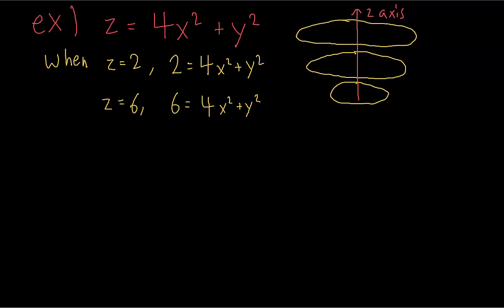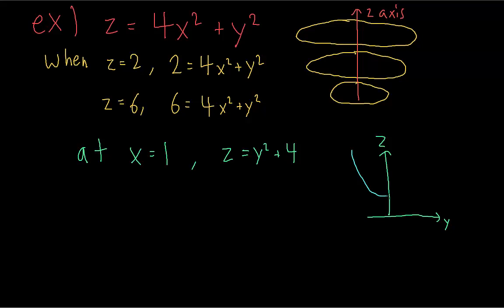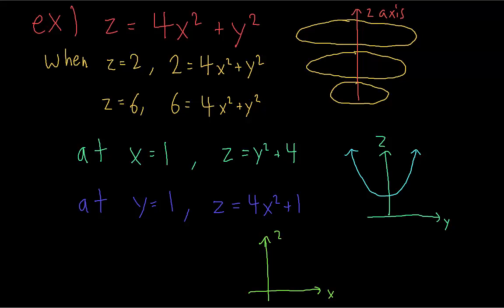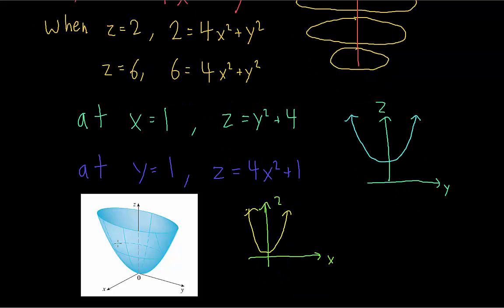Just from these, you can already get a picture of what the graph is going to look like — it's going to be branching outwards as z increases. Now let's take the cross-sections perpendicular to the x and y-axes. If we hold x constant at 1, we get a parabola in the yz-plane, and same for if we hold y constant. For any constant values of x and y, we just get parabolas in the yz-plane and the xz-plane. The quadratic surface put together looks like this: perpendicular to the z-axis there are ellipses getting bigger and bigger, and in the other directions there are parabolas.